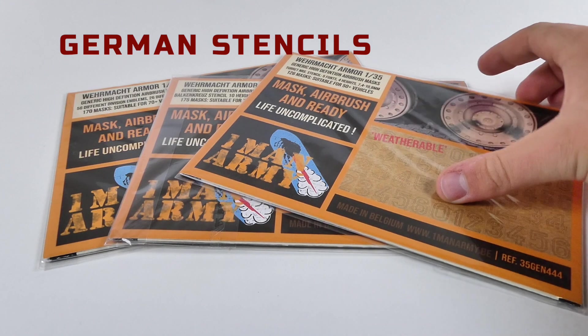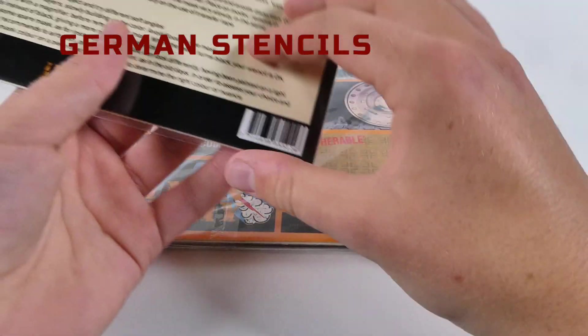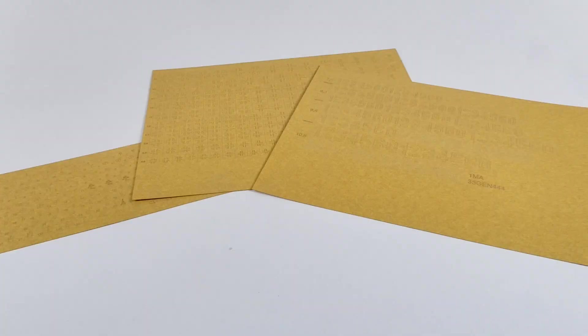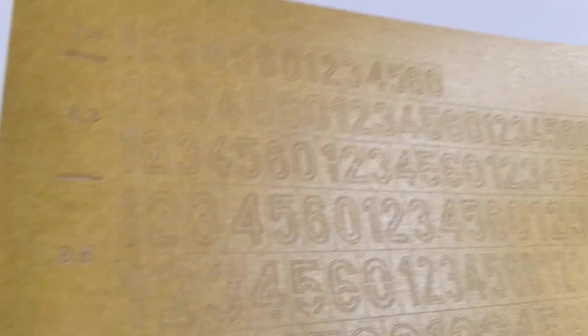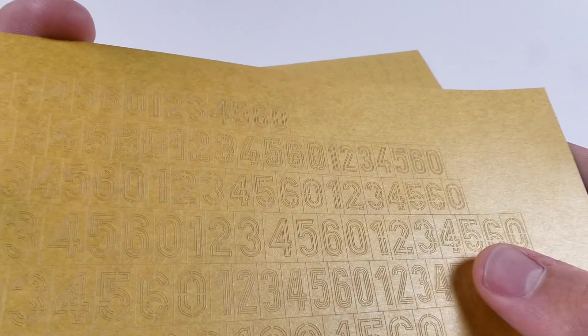Moving on to the German sets, we have a German Balkan Cross set, a Divisional Emblem set, and a Turret Numbers set. As we saw with the U.S. markings, these are really high quality masks, and are really crisply cut.